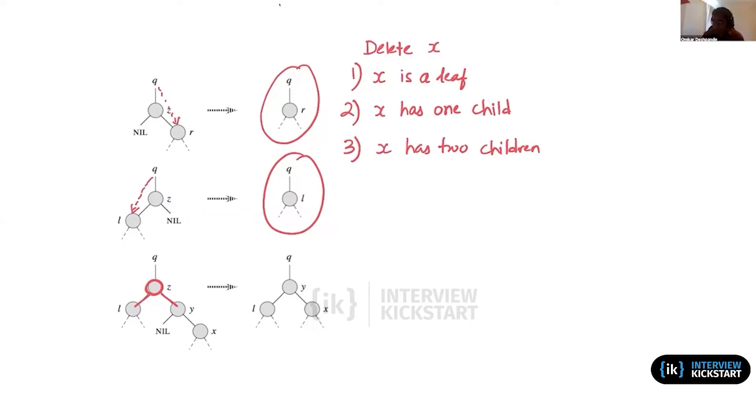To make sure the property is not violated, we either picked the predecessor of z or the successor of z, one of the two. In this case, let's say we are picking the successor of z. We search for the successor of z, the in-order successor, and we take the value and transplant it or copy it into z, the node that contains z. So effectively, we are overwriting z with the value of its immediate successor, and by doing so...